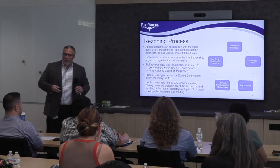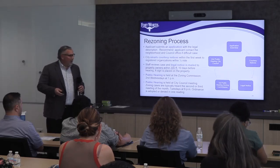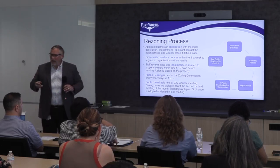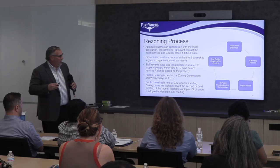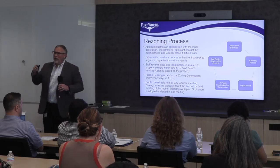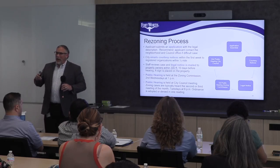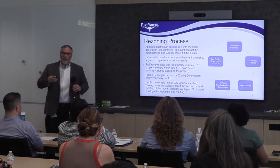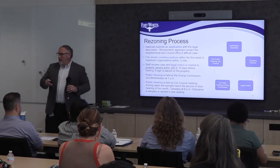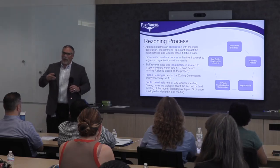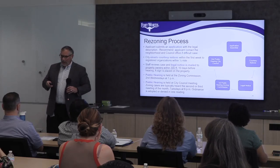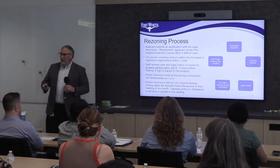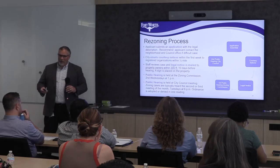Bob needs to submit an application. We have filing deadlines, and once Bob sends that application, it's important to note that when a zoning case goes to these public hearings, it's a public process. Because it's a public process, neighborhood associations are notified along with property owners within 300 feet. We have a myriad of ways we try to notify the public to let them know that Bob is trying to change his zoning.